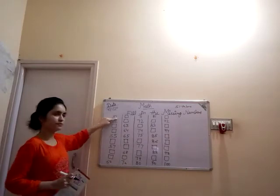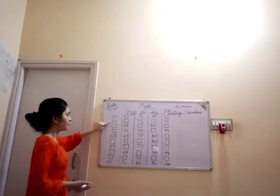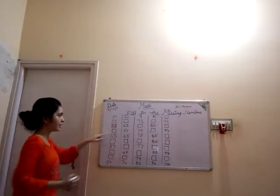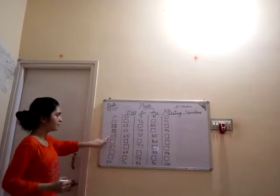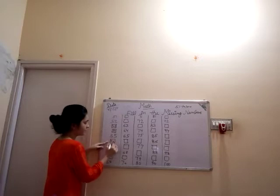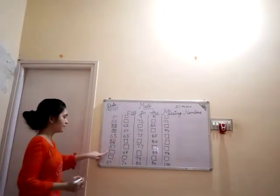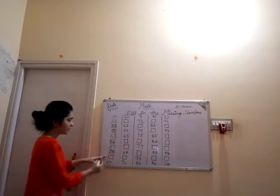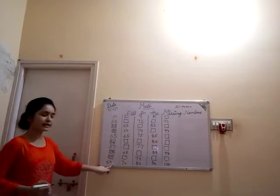Yes. 5, 1, 51. 51 ke bad? 52. 52 ke bad kya atar? 5, 3, 53. 53 ke bad? 5, 4, 54. 54 ke bad? 5, 5, 55. 55 ke bad? 5, 6, 56. 56 ke bad? 5, 7, 57. 57 ke bad? 58. And 58 ke bad? 5, 9, 59. 59 ke bad? 6, 0, 60.